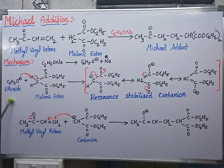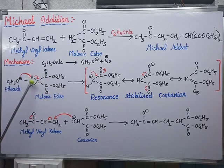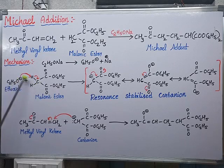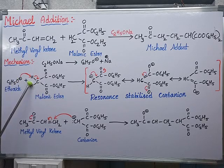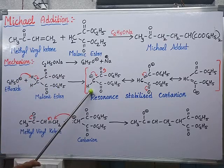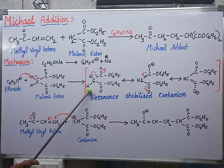The ethoxide ion abstracts a proton; I am shifting this bond towards the carbon. This carbon gets a negative charge, and the ethoxide anion abstracts the positively charged proton, forming ethanol as a byproduct. Ethanol comes out, and a carbanion intermediate is formed.